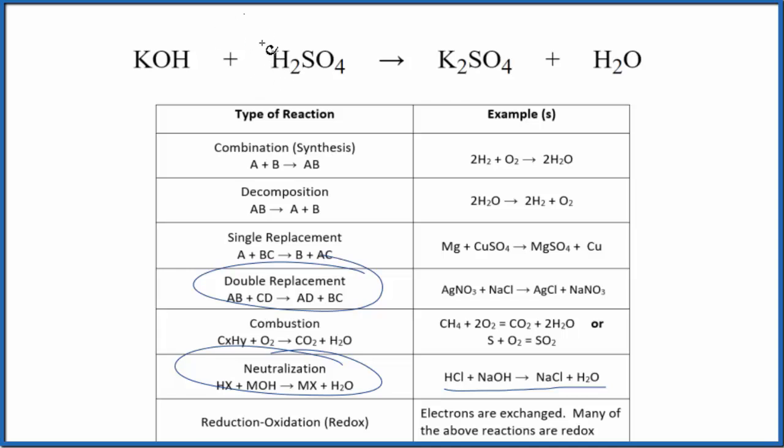So the potassium and the hydrogen, those are the positive ions, they're going to switch places. So the potassium starts out with the OH, but it ends up with the sulfate right here in the potassium sulfate.